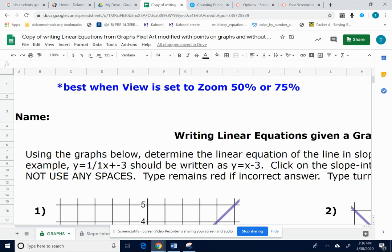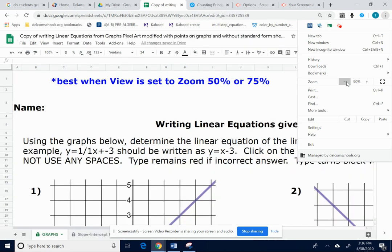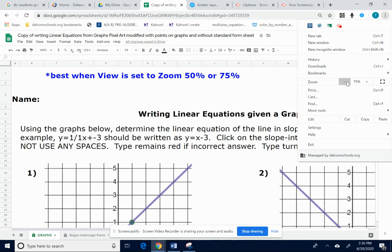First of all, when you open the document, it's going to say best when view is set to zoom at 50 or 75%, so you do want to do that. I like to click the three dots on the top right-hand corner, and go down where it says zoom, and click the negative button until it gets down to 50%.